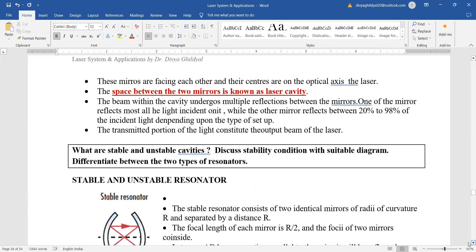The mirrors are facing each other and their centers are on the optical axis of the mirror. Space between the two mirrors is known as laser cavity. One of the mirror is kept fully reflecting and the other is kept partially reflecting.